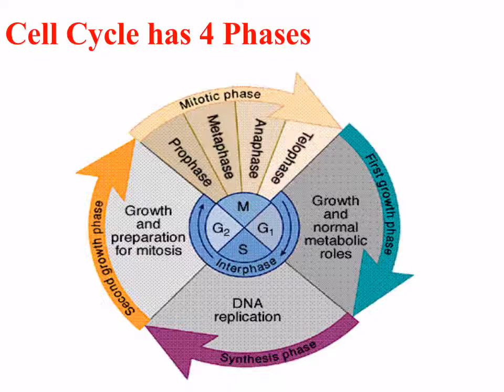The M phase consists of prophase, metaphase, anaphase, and telophase — these are the subphases of the M section of the cell cycle.